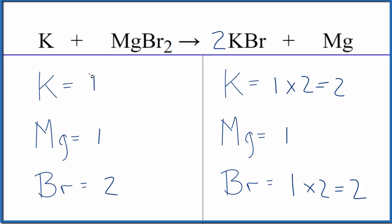Now, if we want to balance the potassium, all we need to do is put a two in front of the potassium atom here. One times two, that gives us two, and we're done. This equation is balanced.